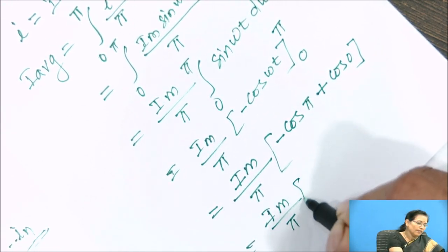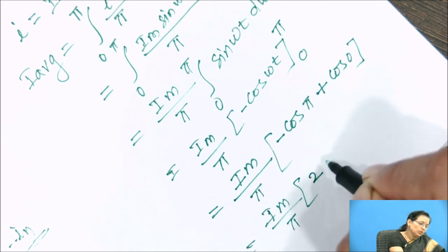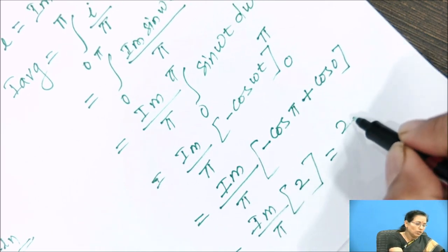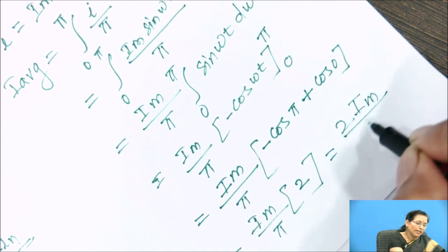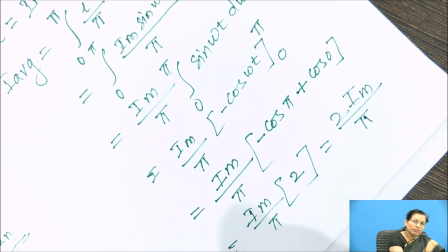That is equal to Im by pi into 2. So 2 Im by pi. So 2 Im by pi is the I average value.